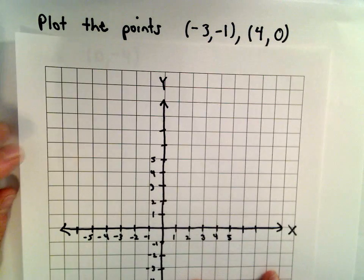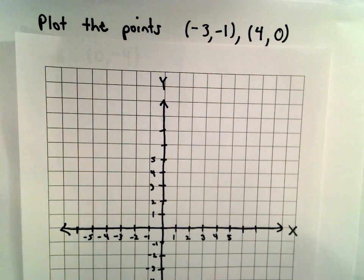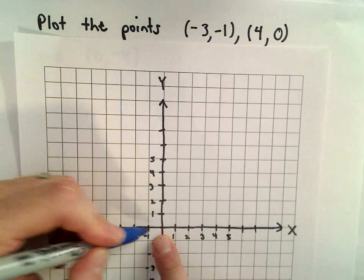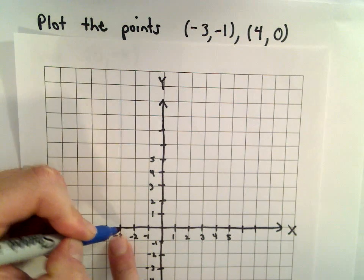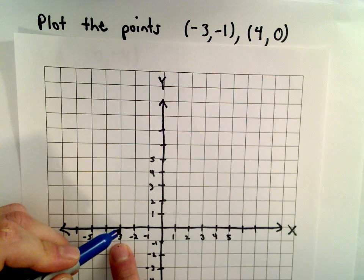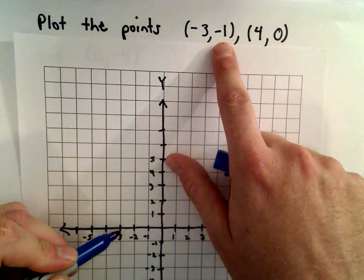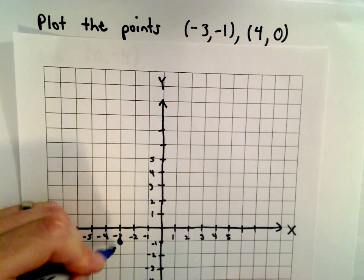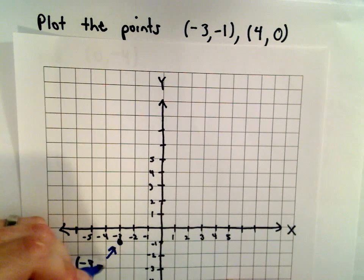To find the point negative 3 comma negative 1, from the origin, I'm going to move three units to the left. One, two, three units to the left. Now I'm sitting at the x-coordinate of negative 3. Then the y-coordinate is negative 1, so we'll go down one unit. That's the point negative 3 comma negative 1.